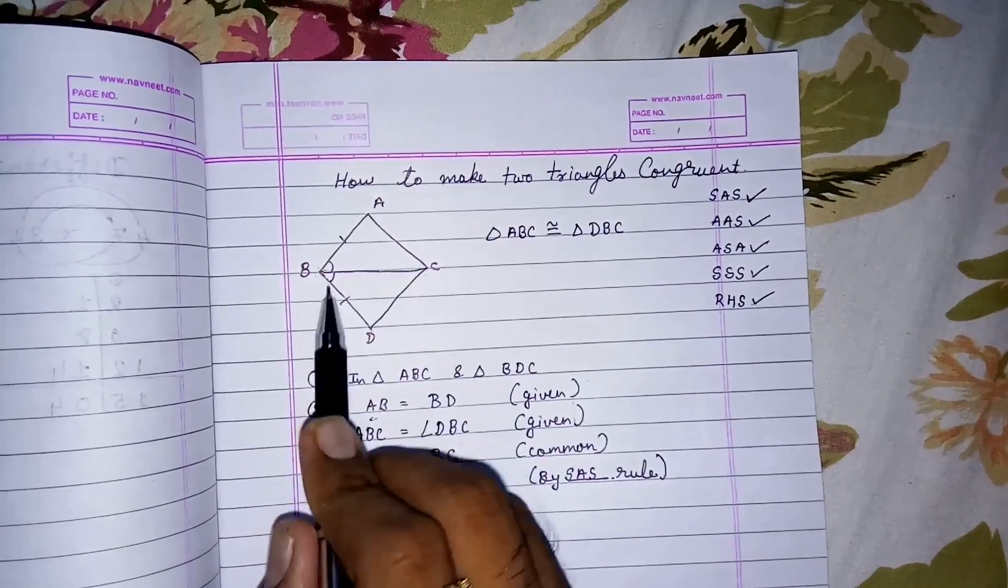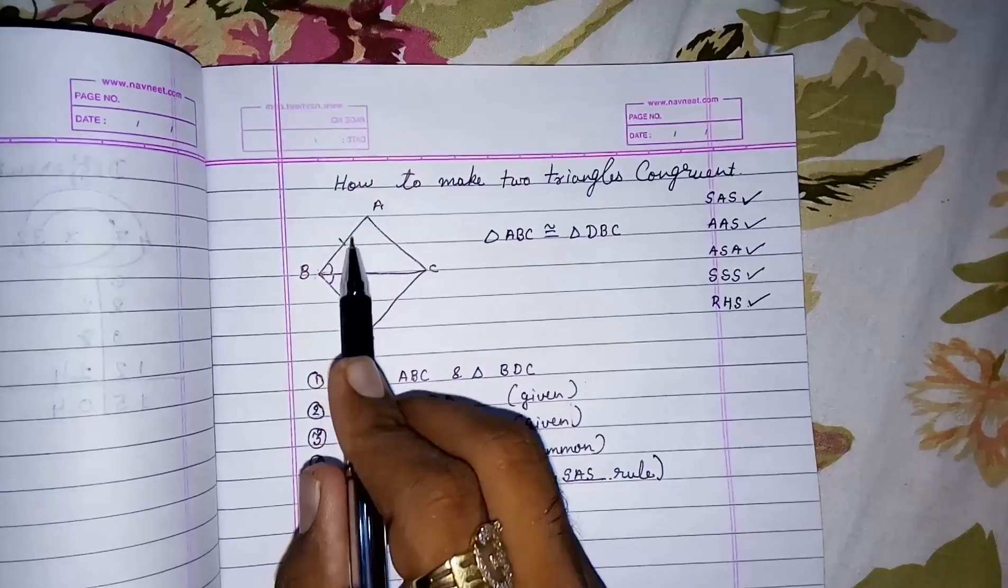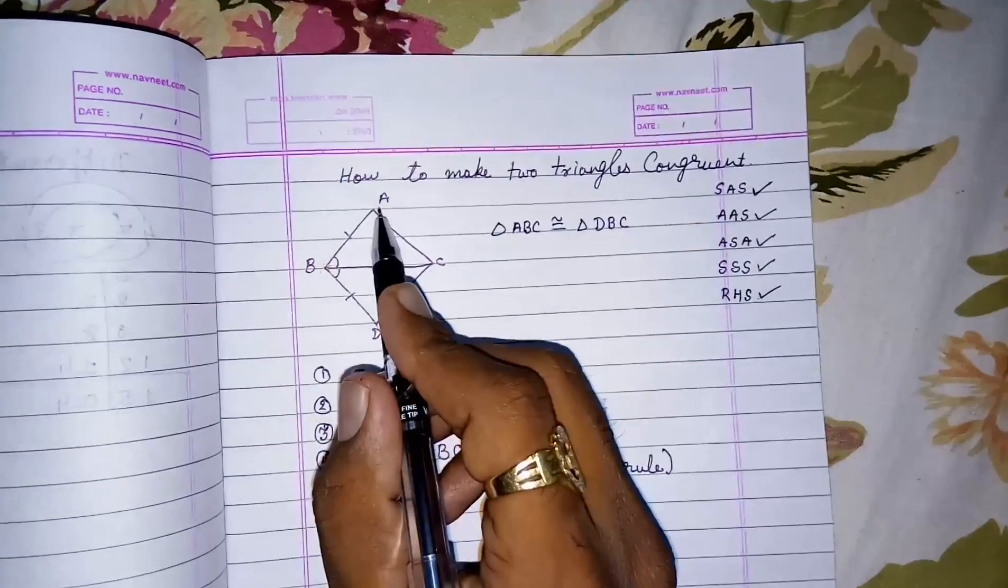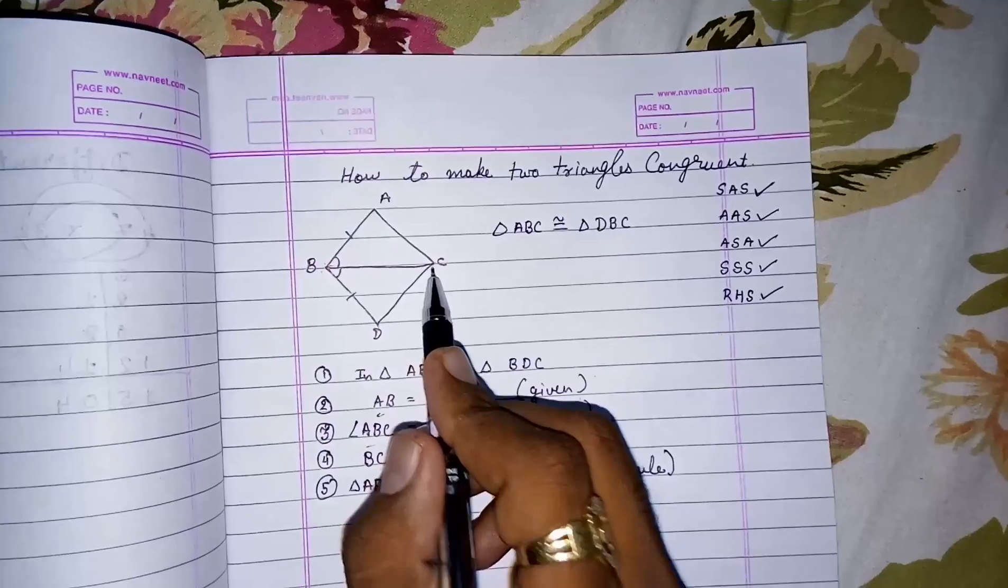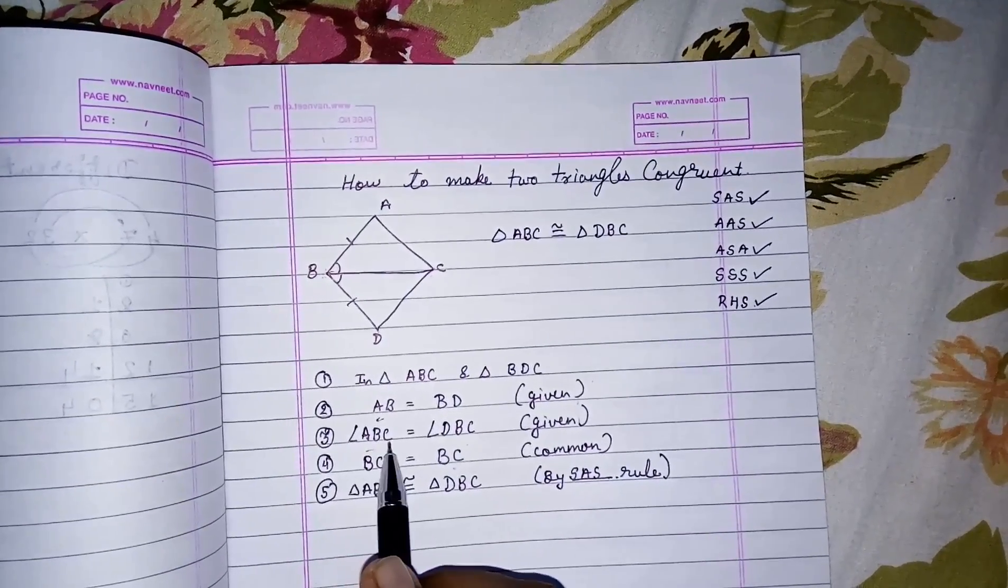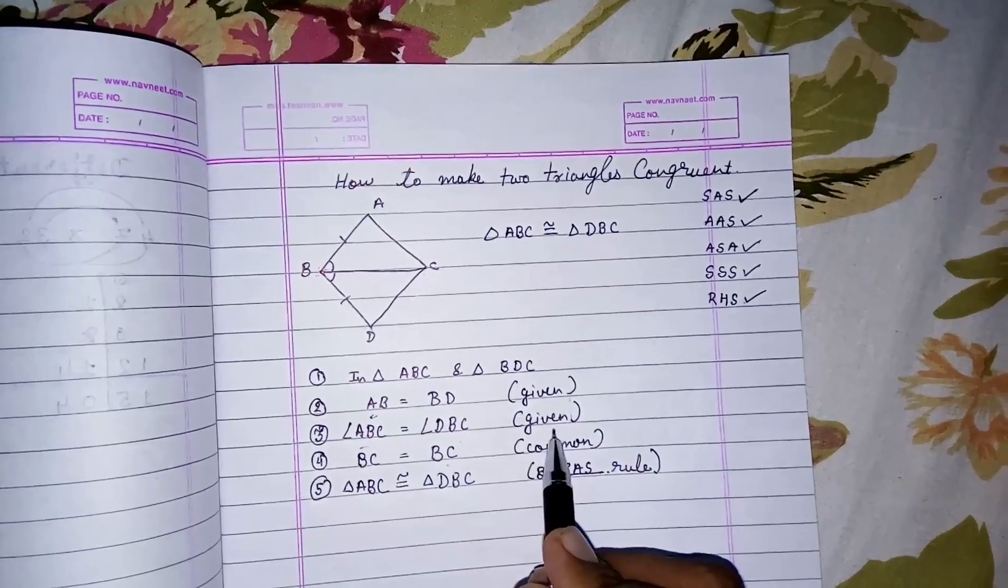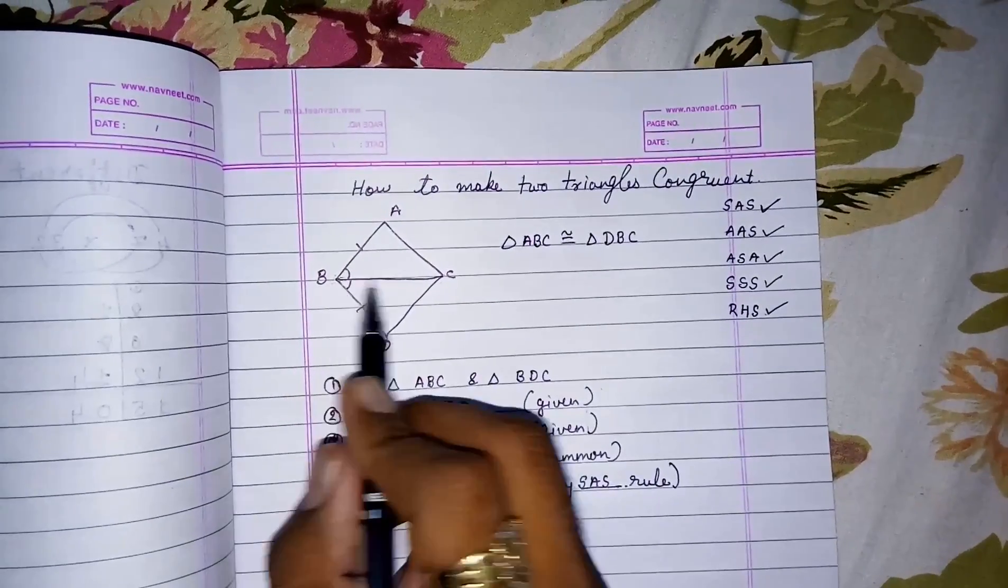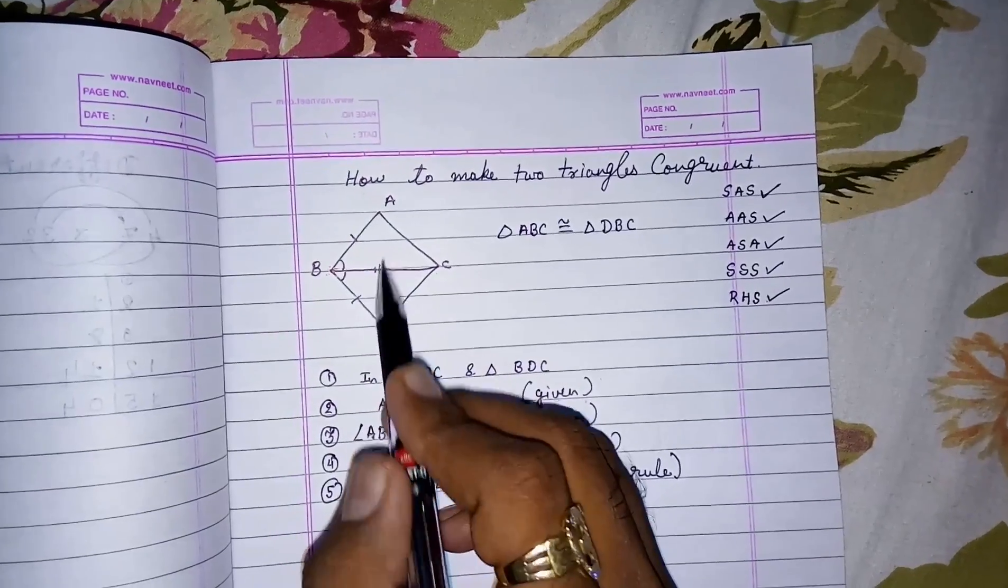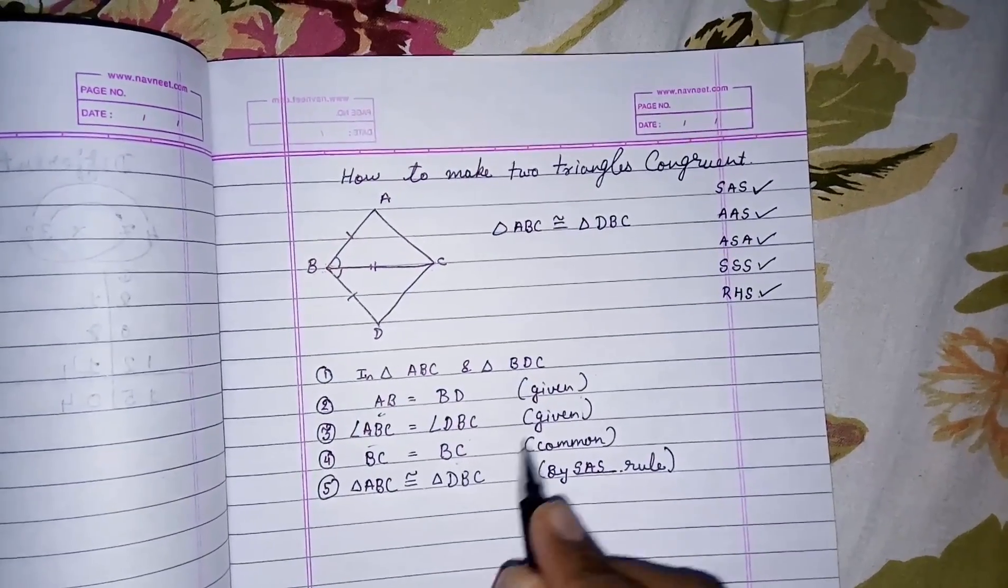Then one by one: AB equals BD, as they had given in the figure. Angle ABC equals angle DBC, that is also given. Then BC equals BC, common, because it is in both of the triangles.